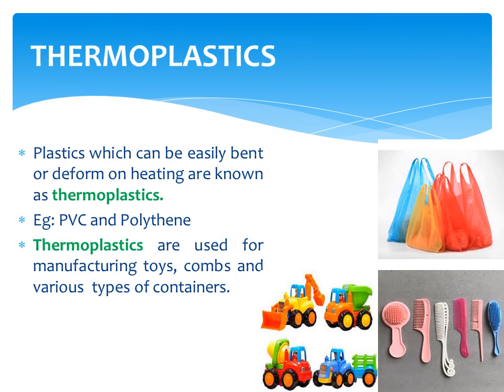First, let us learn about thermoplastics. Plastics which can be easily bent or deformed on heating are known as thermoplastics. Examples are PVC and polythene. They are used for manufacturing toys, combs, and various types of containers.